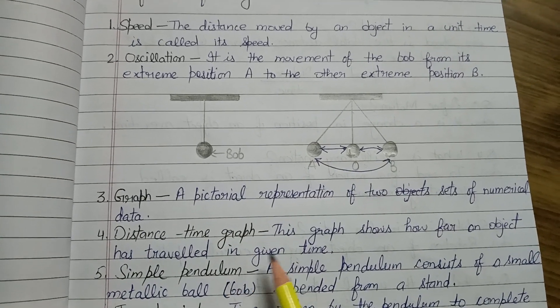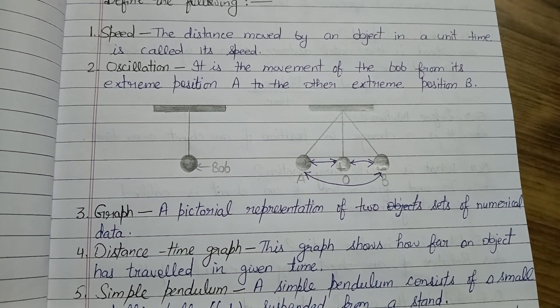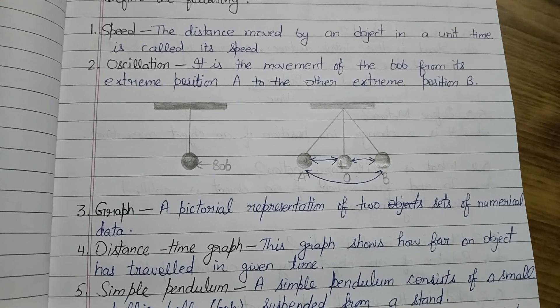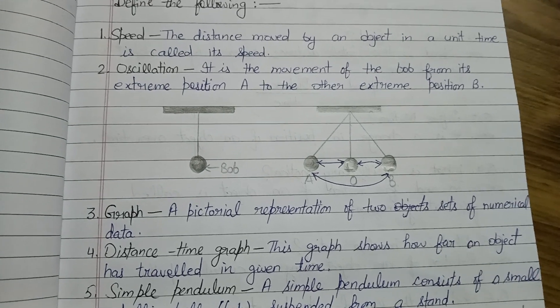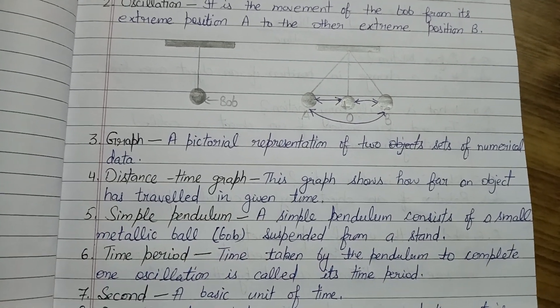Next is graph - a pictorial representation of two sets of numerical data. Jab hum koi given set of data hai, toh jab hum us ko picture ki tarah represent karte hai, that is called graph. Next is distance-time graph.